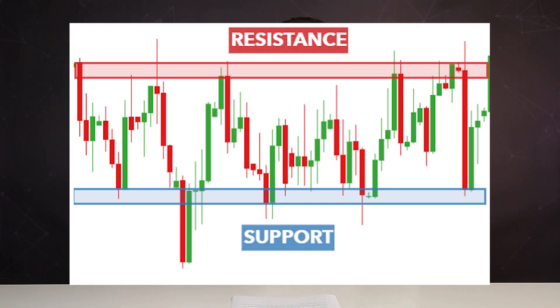Levels are divided into two types. If the price comes from top to bottom and doesn't break through, then it acts as a support. When the price rises to a level from below, then this is resistance.